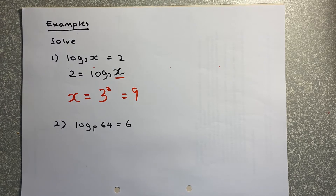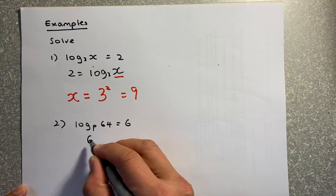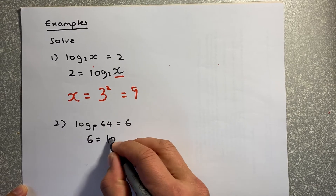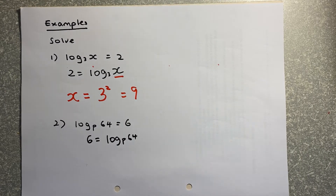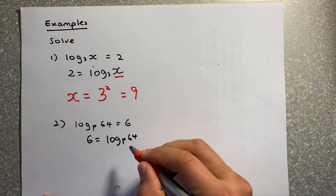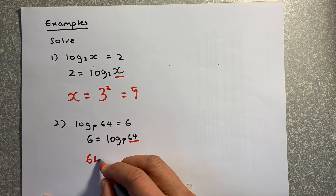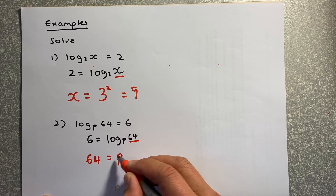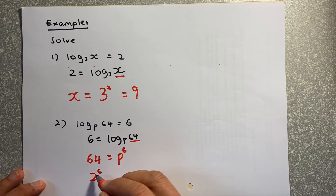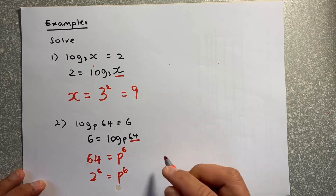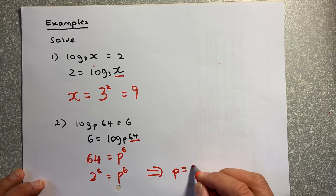The next question: the single number must be in front, so we write 6 equals log base P of 64. Now we swap them around — the last number becomes your first number. So 64 equals P to the power of 6. Since 64 is actually 2 to the power of 6, that equals P to the power of 6, so we conclude that P equals 2.